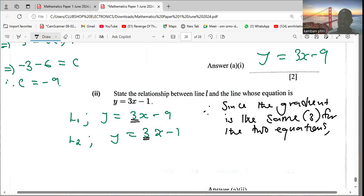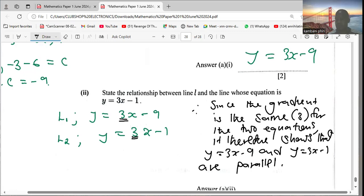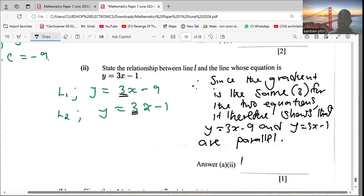We are saying since the gradient is the same for the two equations, it therefore shows that y = 3x - 9 and y = 3x - 1 are parallel. These lines are parallel. That's what it means. So here you can say they are parallel lines. That is the relationship.